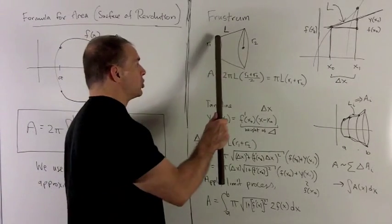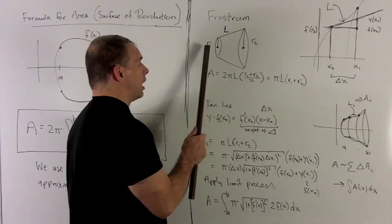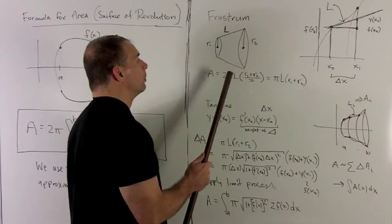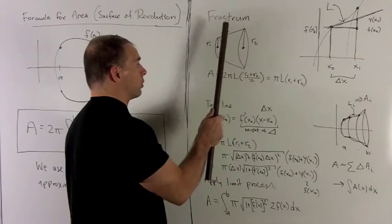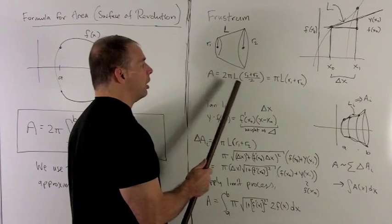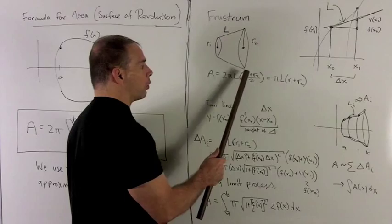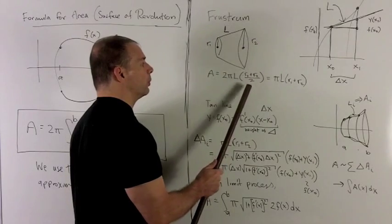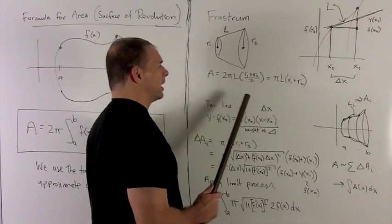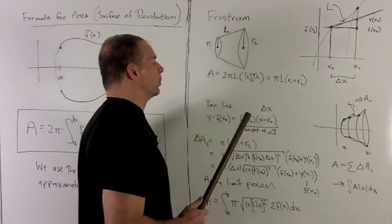To get the area of a frustrum, I need to measure the slant height L across the top and both radii R1 and R2. The formula is 2π times L times the average of the radii, or R1 plus R2 over 2. The 2s cancel to give me π times L times (R1 plus R2).